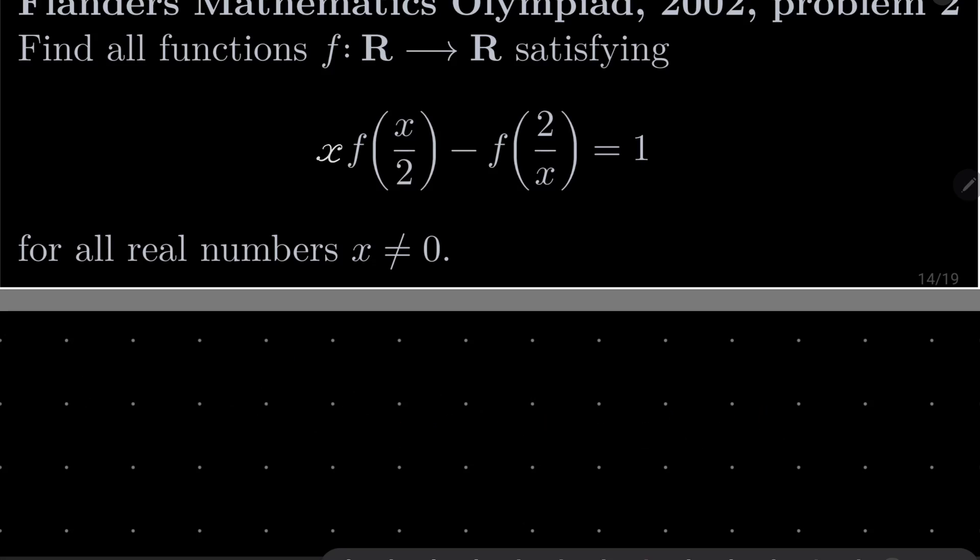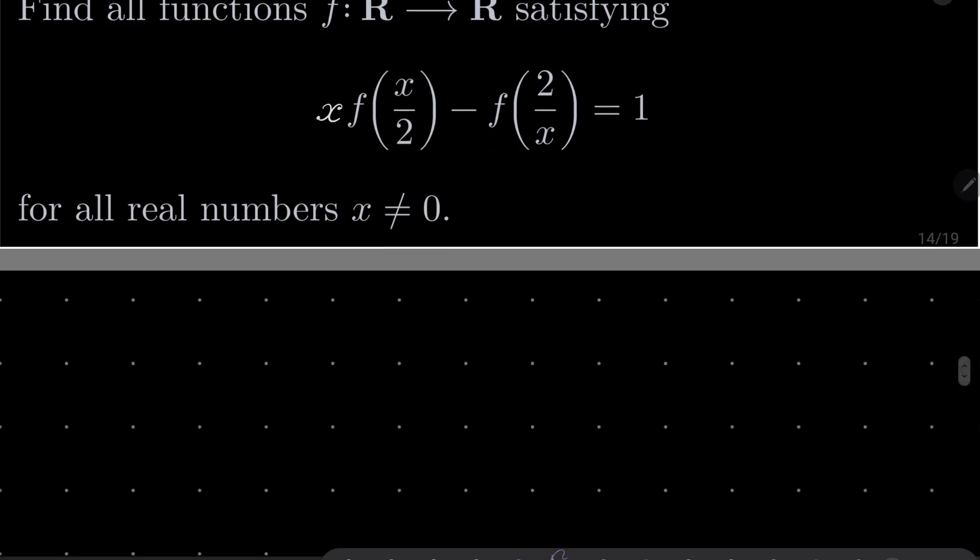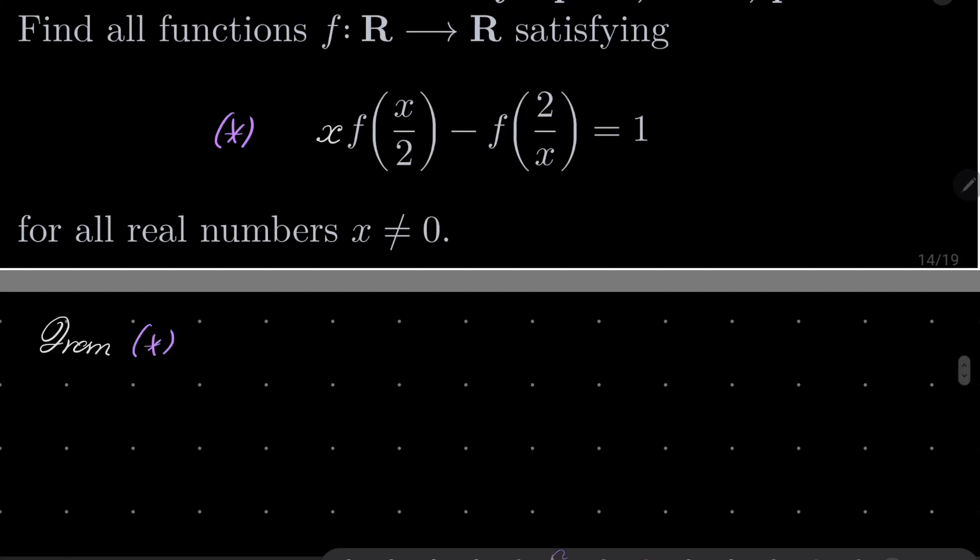Right, so maybe let's call this equation asterisk. From our equation asterisk we have the following: f(2/x) equals xf(x/2) minus 1. Let's remember it.